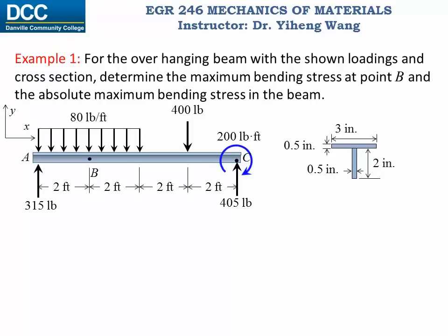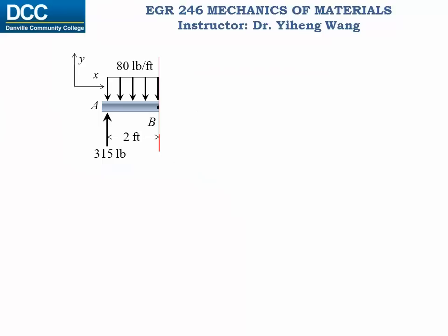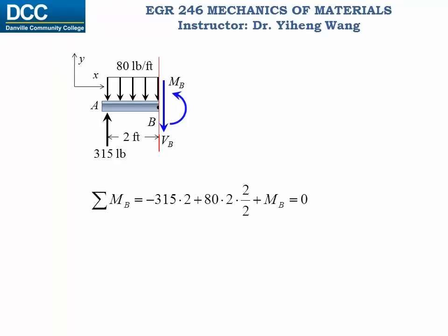In order to solve for the maximum bending stress at point B, we need the internal bending moment at point B. We use the method of section, sectioning the beam at point B to expose the internal shear force VB and internal bending moment MB. There is no internal normal force since there is no force along the x direction. We only need to set up the resultant moment equation about point B to solve for MB.